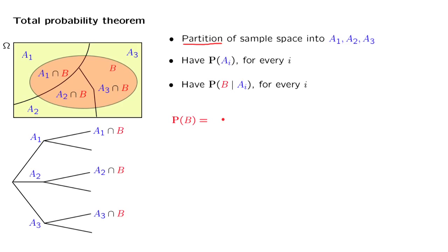First, we realize that event B consists of a number of disjoint pieces. One piece is when event B occurs together with event A1. Another piece is when event B occurs together with A2. These three sets are disjoint from each other, as we see in this picture. And together, they form the event B.